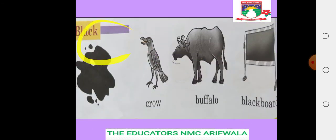The next color is black: B-L-A-C-K, black. Crow: C-R-O-W, crow. Buffalo: B-U-F-F-A-L-O, buffalo. Blackboard: B-L-A-C-K-B-O-A-R-D, blackboard. Crow, buffalo, blackboard.